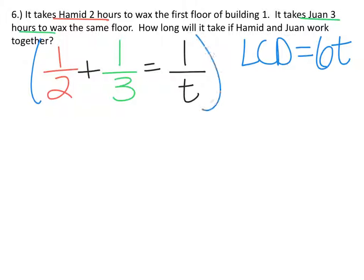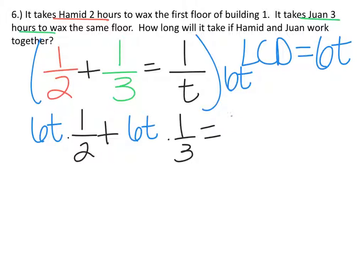So we'll multiply everything by six T. So I have six T times one half plus six T times one third equals six T times one over T.